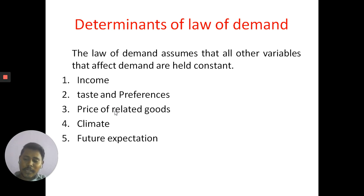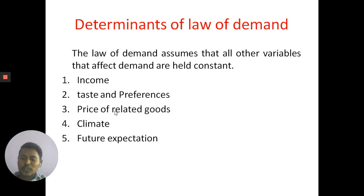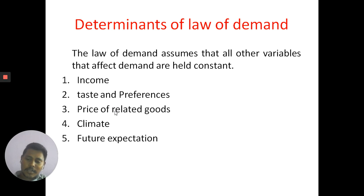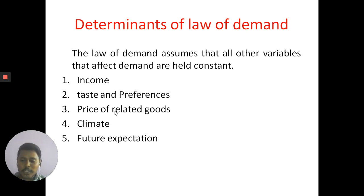If income increases, a consumer's demand for the product also increases; if income decreases, demand also decreases. Taste and preference should also be constant — if they fluctuate, demand does not operate normally. Related goods may be substitute goods or complementary goods. Future expectation is also referred to as speculation.